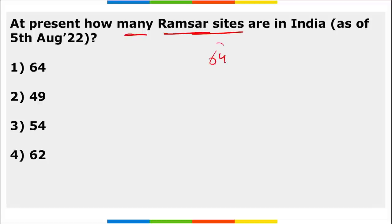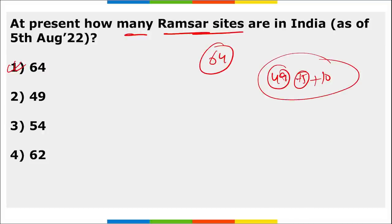At present, how many Ramsar sites are there in India? There are a total of 64 Ramsar sites in India. Earlier there were 49, then 5 were added, and then 10 more sites were added, totaling 64.